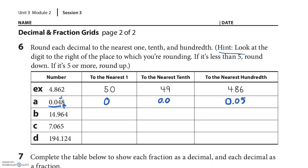Nearest whole for the next number — fourteen or fifteen. I look at that nine — it's five or greater, so it pushes fourteen up to fifteen. For the nearest tenth, I go back to the original — it's going to be fourteen point nine or round up to fifteen point zero. That's a six, so it rounds up to fifteen and zero tenths. For the nearest hundredth, I look at the four only — so it's fourteen point nine six.